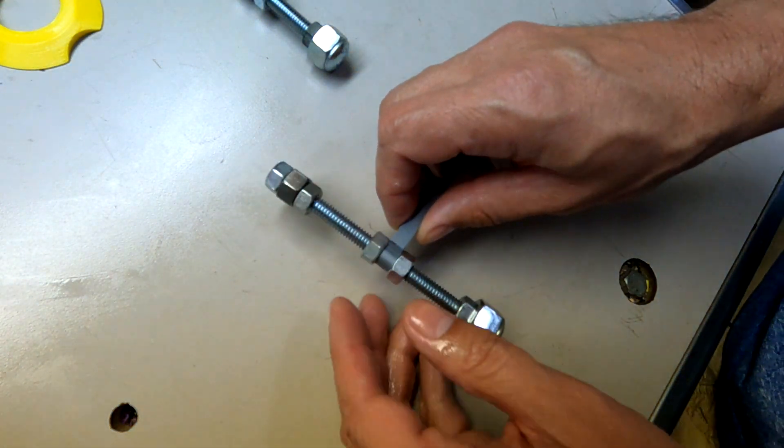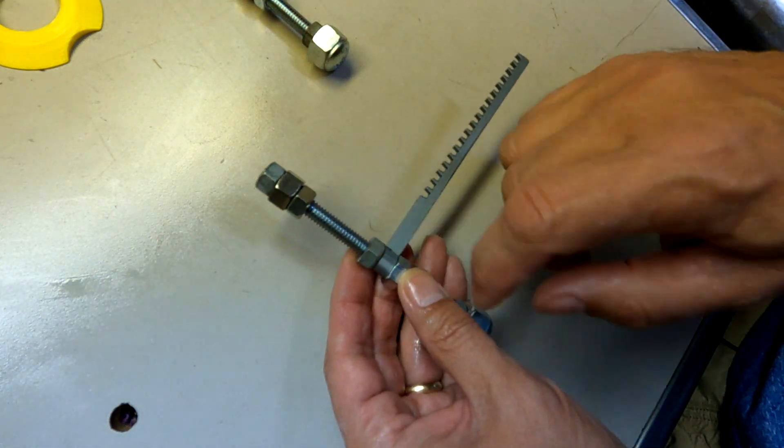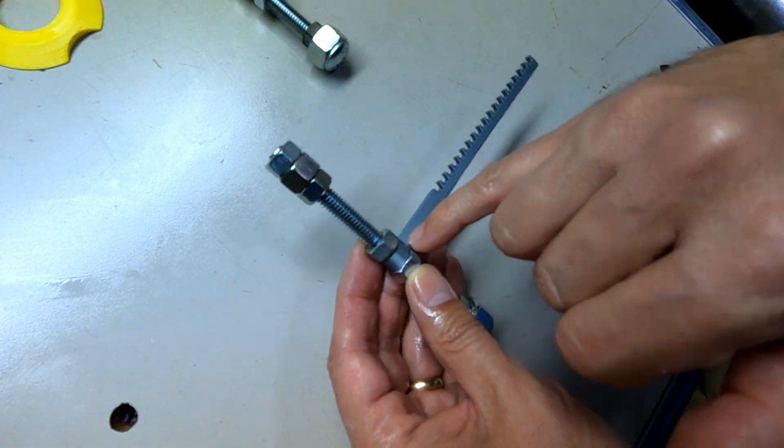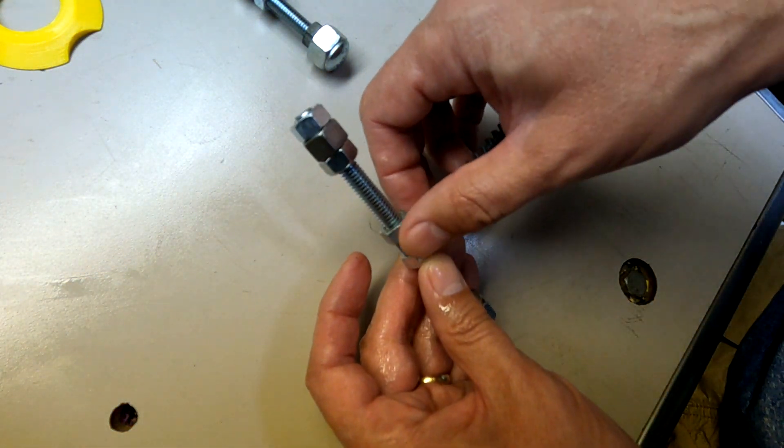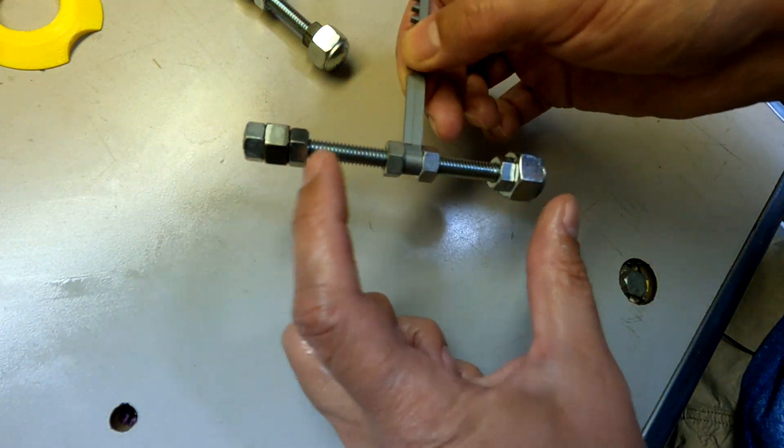The key thing is that the bolt that goes through has to be five sixteenths because that's the diameter of the inside of the hole on the little loop that's on the top of the counterbalance piece. And the position of this, I have it centered on here.